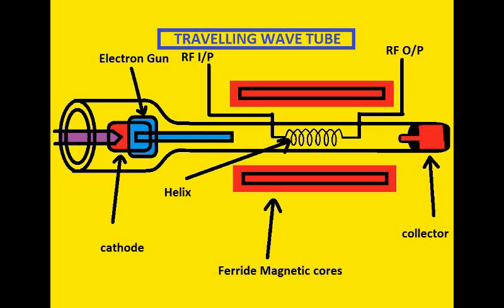As we considered in klystrons, they are resonant cavity structures and they cannot support huge bandwidth of operation, as they are designed for narrow band operation. For continuous wave radars they can be used, but when we go for higher bandwidth utilization we cannot implement reflex klystrons or multi-cavity klystrons. So we are going for traveling wave tubes.